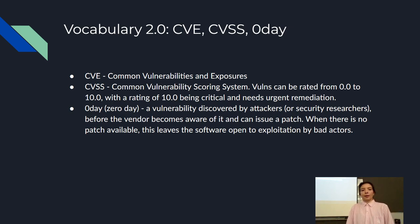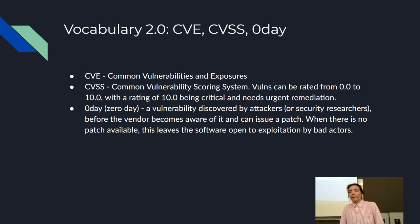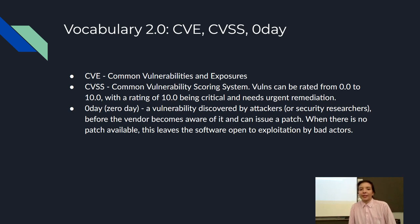A zero-day — some people call it O-day — is a vulnerability discovered by attackers or security researchers before the vendor becomes aware of it and can issue a patch. One of the most recent examples is log4j, which happened about two years ago. The thing about zero-days is that nation-state actors will use that opportunity to exploit and do harmful things.